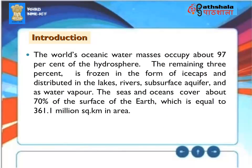Introduction: The world's oceanic water masses occupy about 97% of the hydrosphere. The remaining 3% is frozen in the form of ice caps and distributed in lakes, rivers, subsurface aquifers, and as water vapor. The seas and oceans cover about 70% of the surface of the Earth, which is equal to 361.1 million square kilometers in area.